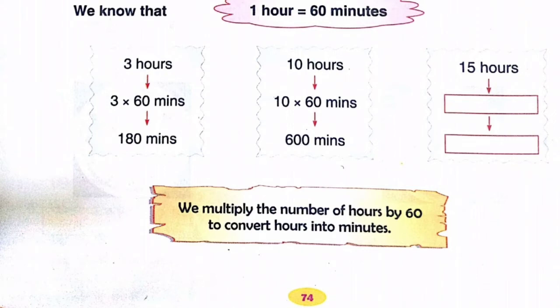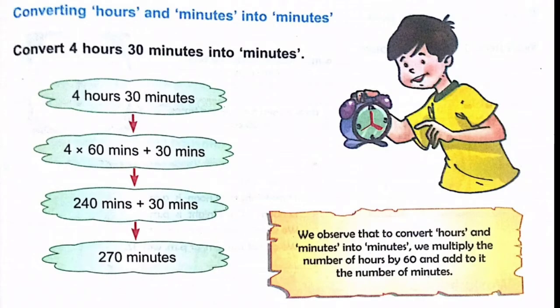One hour is equal to 60 minutes. To convert hours into minutes, multiply by 60. For example: 15 hours = 15 × 60 = 900 minutes. 10 hours = 600 minutes. 3 hours = 180 minutes. For 4 hours 30 minutes: 4 × 60 + 30 = 240 + 30 = 270 minutes.